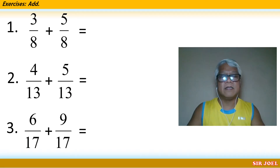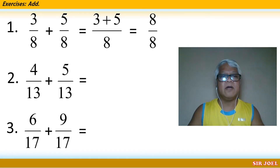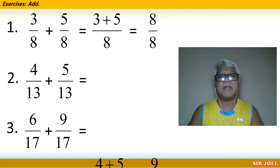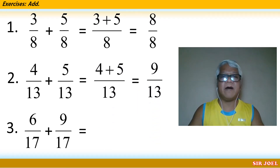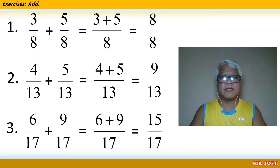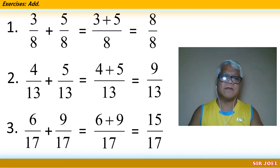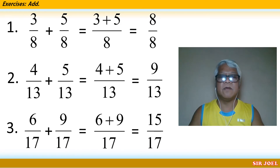Number 1: 3 over 8 plus 5 over 8. Copy the denominator 8, then add 3 and 5 to get 8 over 8. Number 2: 4 over 13 plus 5 over 13. Copy the denominator 13 and add 5 and 4 to get 9 over 13. Number 3: Copy the denominator 17, then add 6 and 9 in the problem 6 over 17 plus 9 over 17 to get 15 over 17.